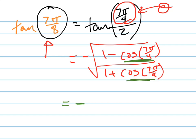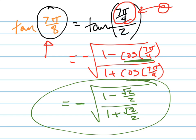So our answer is negative square root of (1 - √2/2)/(1 + √2/2). And that is your exact answer for the tangent of 7π/8. And if you don't believe it, punch that into your calculator. Make sure you're in radians, and you'll see that they're exactly the same thing. Thank you.